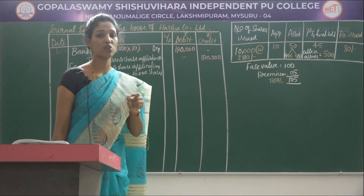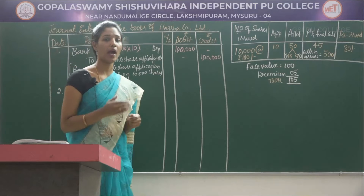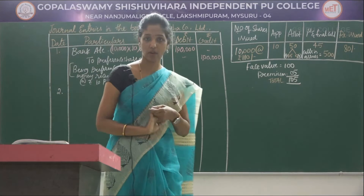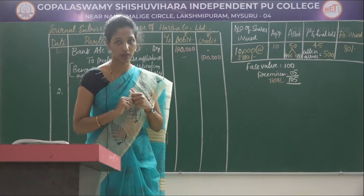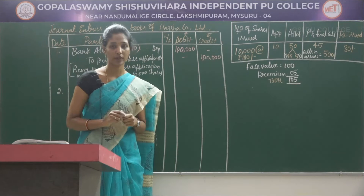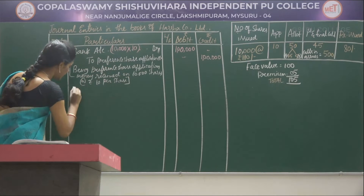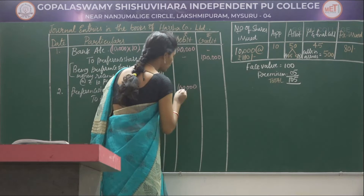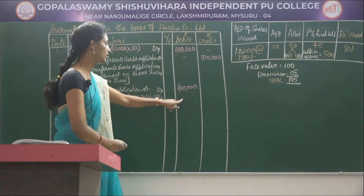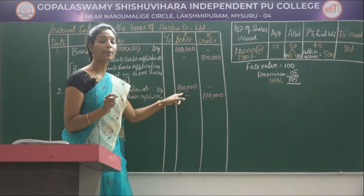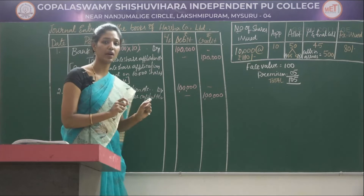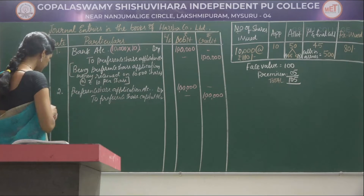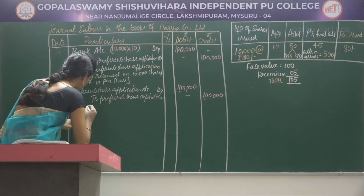The first journal entry relates to application money received and the second journal entry relates to application money transferred to share capital account. Preference Share Application Account debited to Preference Share Capital Account — Rs 1 lakh debited, the amount received at the stage of application. You transfer the amount to the share capital account. Narration: Being preference share application money transferred to preference share capital account.